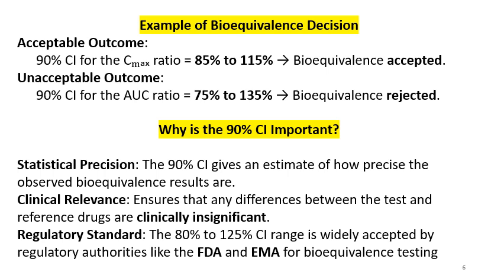Why is 90% CI important? Because it considers statistical precision, clinical relevance, and regulatory standards. Regarding statistical precision, the 90% CI gives an estimate of how precise the observed bioequivalence results are. For clinical relevance, it ensures that differences between the test and reference drugs are clinically insignificant, meaning both products will have similar therapeutic efficacy and safety. For regulatory standards, the 80–125% CI range is widely accepted by regulatory authorities like the FDA, EMA, and others for bioequivalence testing.